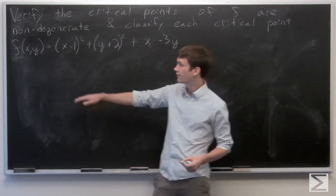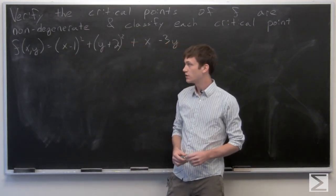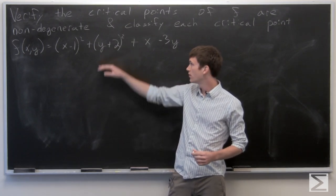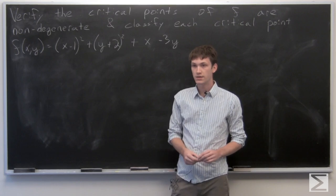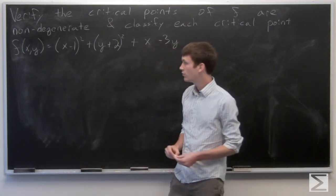So we have our function f(x,y) is equal to the quantity (x-1)² plus the quantity (y+2)² plus x minus 3y. And first let's find the critical points.